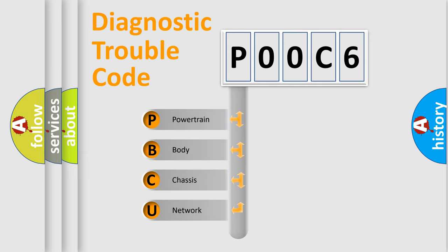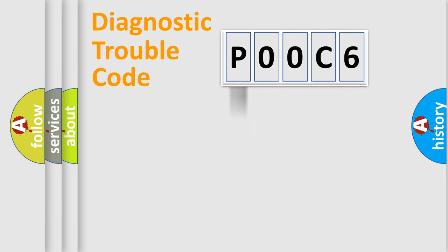We divide the electric system of automobile into four basic units: Powertrain, Body, Chassis, Network. This distribution is defined in the first character code.